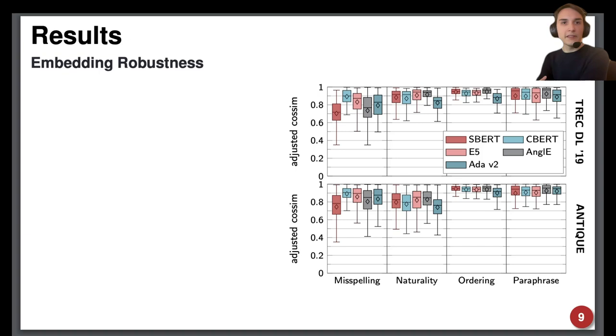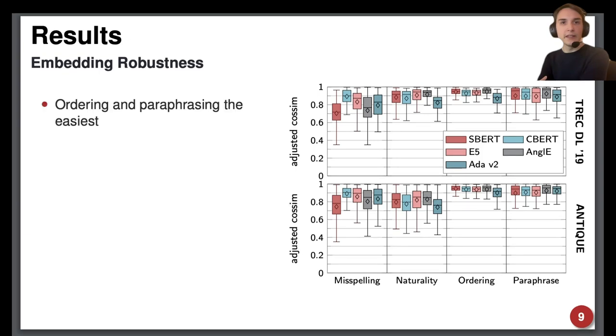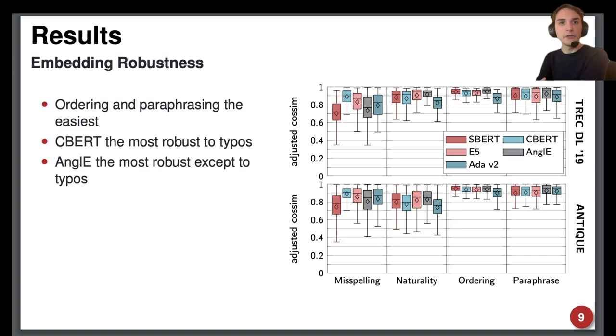For embedding robustness we can observe similar trends. In general all models are most robust to ordering and paraphrasing and CharacterBERT is the most robust model on misspelling which may be expected due to its architecture and training. On all other categories however, AnglE is the most robust with the highest median and smallest spread.